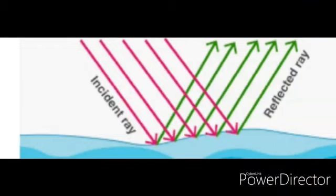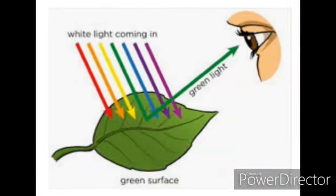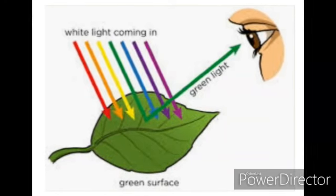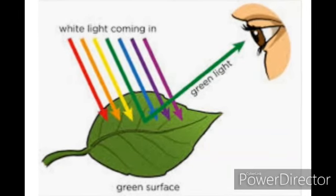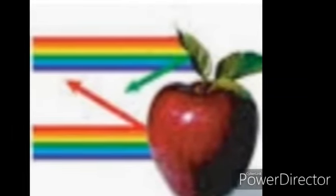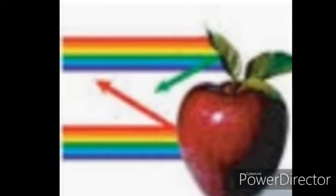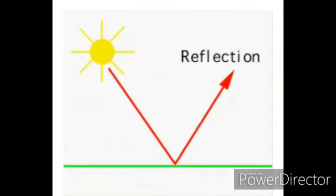The colour of an object is due to the phenomenon of reflection. White light is a bundle of all colours. For example, when white light falls on a leaf, it absorbs light of all wavelengths and reflects only light corresponding to green colour — that's why a leaf appears green to our eyes. Similarly, when light falls on an apple, it absorbs light of all wavelengths and reflects only light corresponding to red colour, that's why an apple appears red to our eyes.